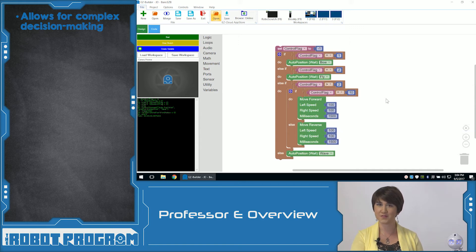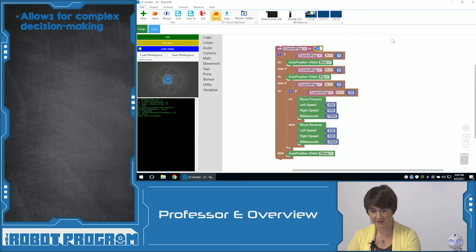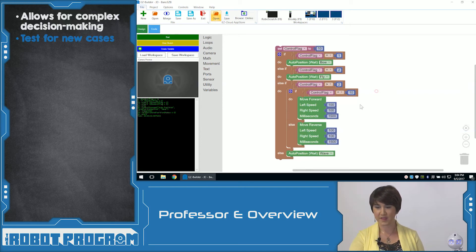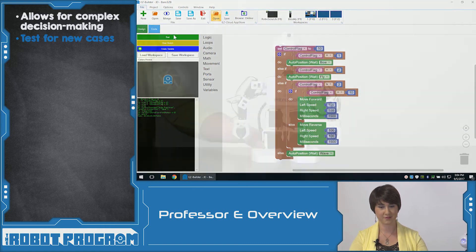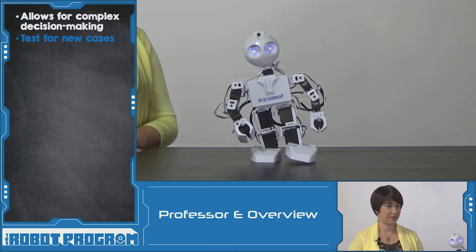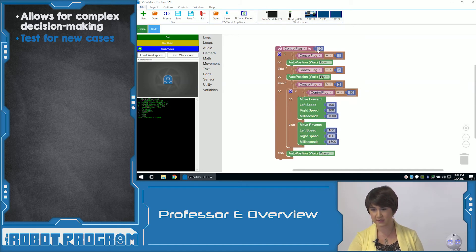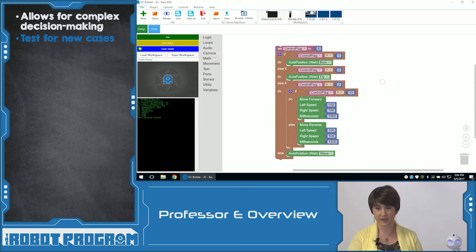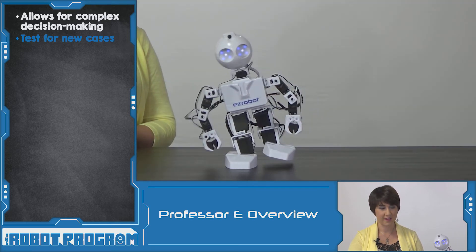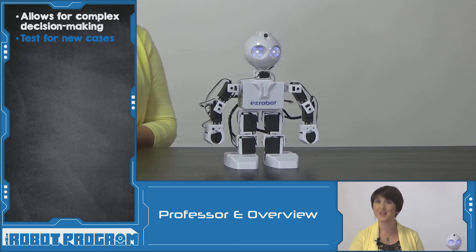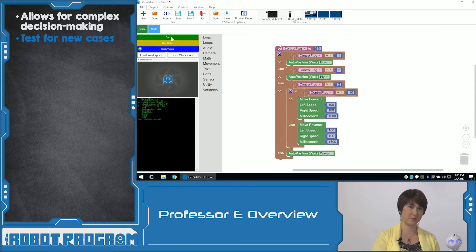It's a lot of options — let's try it out. First, let's set ControlFlag to ten. We know from our code we're expecting him to move forward. There he goes. Now let's choose a number that's greater than two and not equal to ten — let's choose six. Start. And he goes backwards. Our code is working exactly how we expect it to. Let's see if there's a way we can break our code.